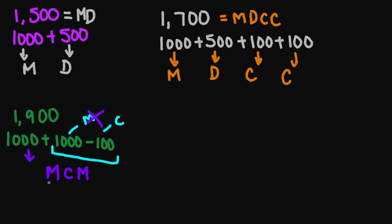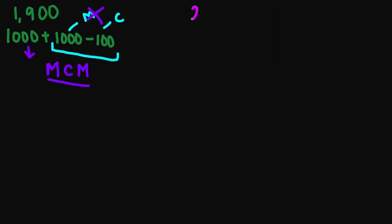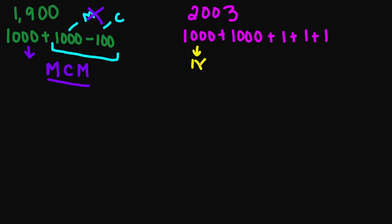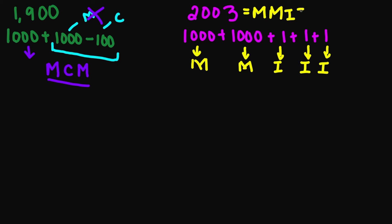Let's look at the number two thousand three. I'm going to separate this into one thousand plus one thousand plus one plus one plus one. One thousand is M, one thousand is M, and then one is I, one is I, and then one is I. So your final answer is going to be MMIII.